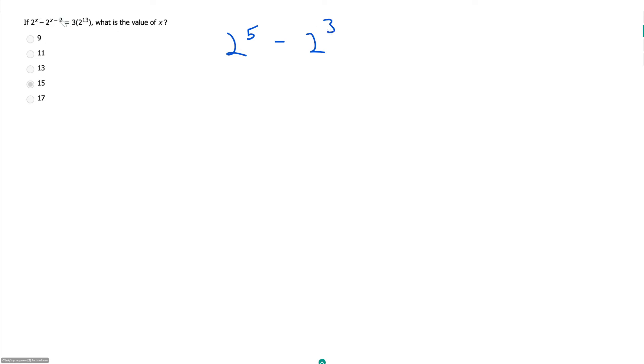Because 5's our x, then 3 would be our x minus 2. And so if I had this, what I can do is I can factor out this 2 to the 3rd. I should be able to do the same thing here with my 2 raised to the x minus 2. And so once I do that, I have to reverse engineer my exponent rules.